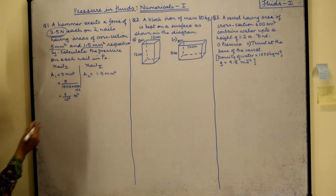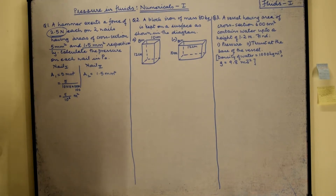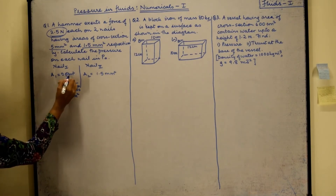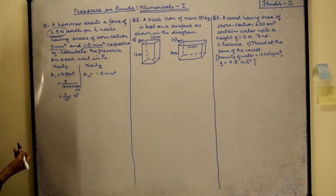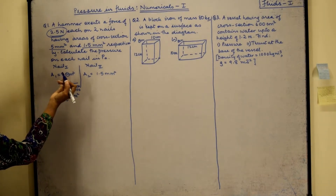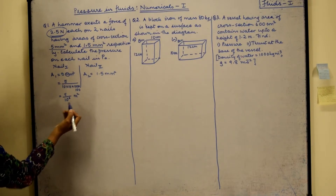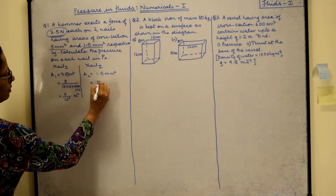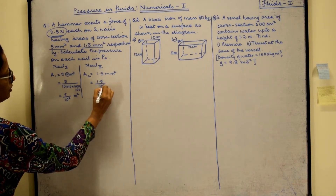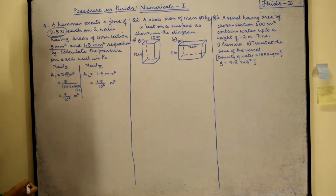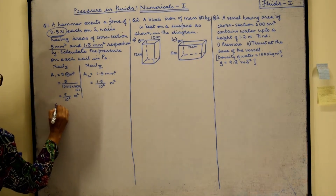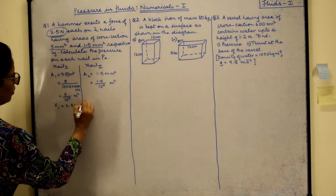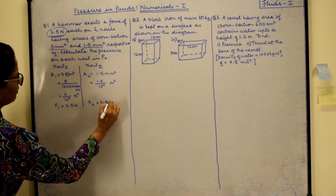So A1 becomes 5 divided by 10⁶ m². You can also remember it this way: the prefix milli means one thousandth of a meter, so for 5 mm², divide by 1000 × 1000. With the same logic, A2 = 1.5 divided by 10⁶ m². The force on each nail is 2.5 newton.